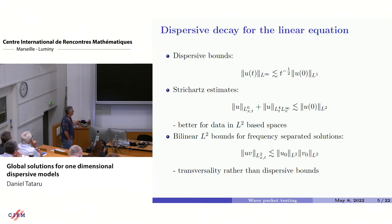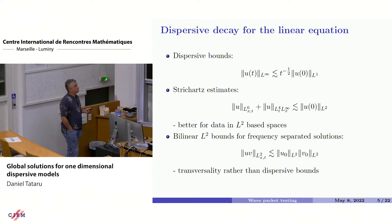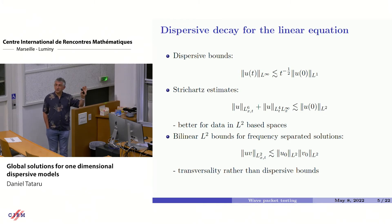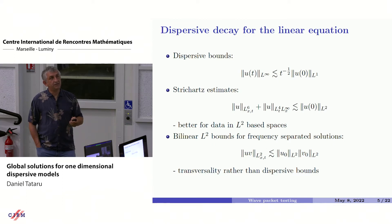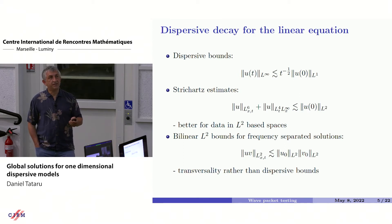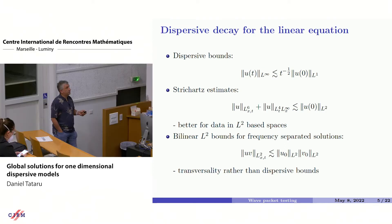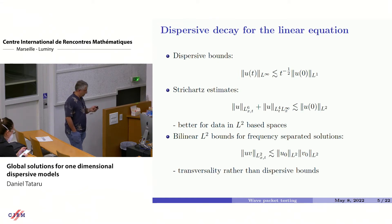Going to the dispersive properties of our linear equation, we have dispersive decay bounds: the t to the power minus one half which comes from the decay of the fundamental solution. By the way, in many of these estimates there should be derivatives — I've cheerfully omitted all derivatives for brevity. Then Strichartz estimates: I wrote two here, the L6 estimate and the L4 L-infinity estimate. In linear terms the L4 L-infinity may seem more fundamental since the L6 estimate follows from it by interpolating with energy, but we'll see that the L6 is much more convenient to use.